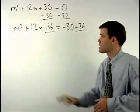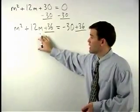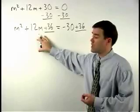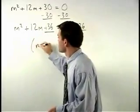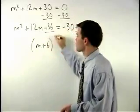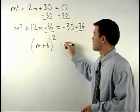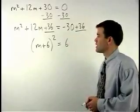Notice that the left side now factors as m plus 6 times m plus 6, or m plus 6 squared. The right side simplifies to 6.